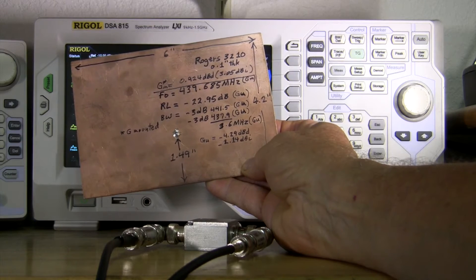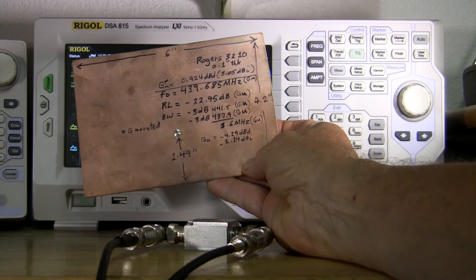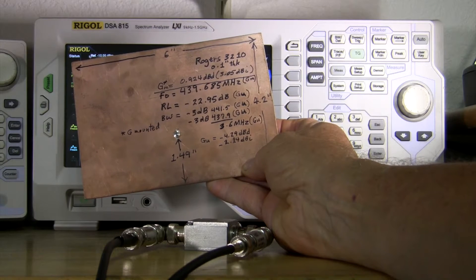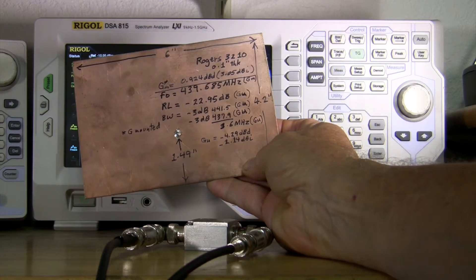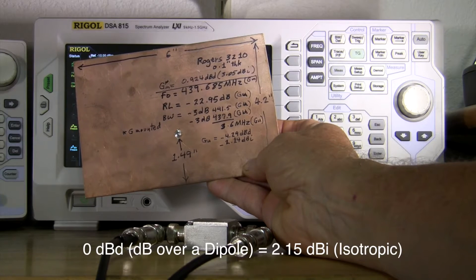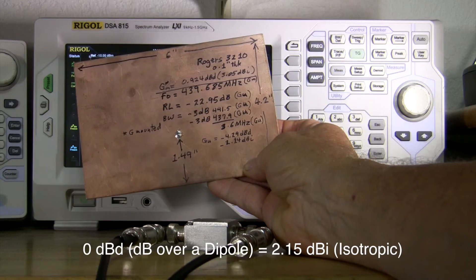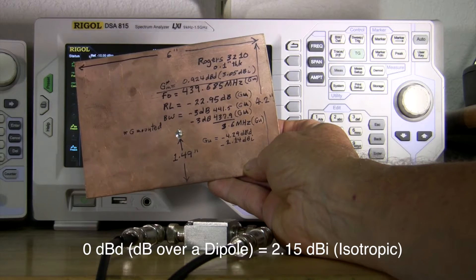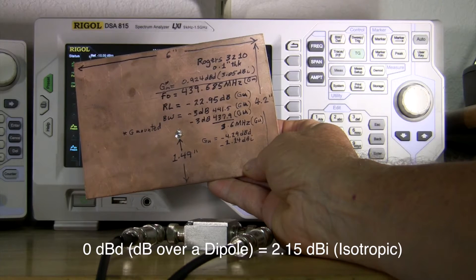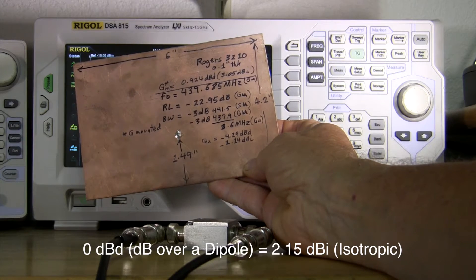When it was mounted, that's the GM figure there. The match wasn't as good of course and I never did rematch it, but anyway it was 0.924 dBd, so a little bit more than a dipole, about a dB, and that's 3.05 dBi.